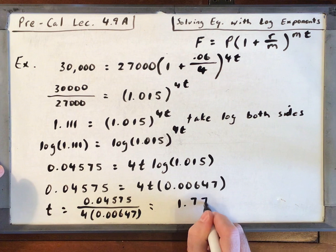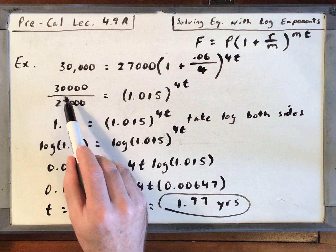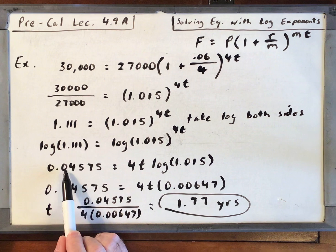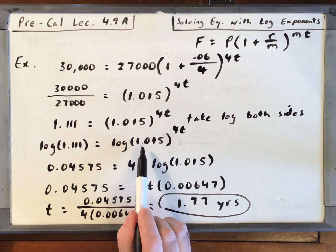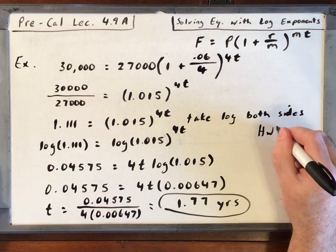And that is 1.77 years. Really cool. Finally, we can solve for time in the compound interest formula just by using logs. You could have used the natural log, you would have got the same final answer. However, these numbers would have been different. The 0.04575 would have been a different number, and the natural log of 1.015 would have been a different number than this. But it would have worked out after you did the algebra to 1.77 years.